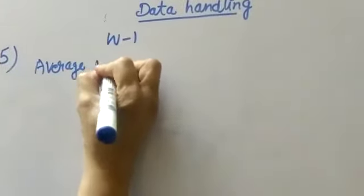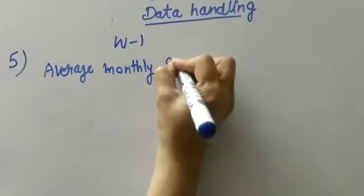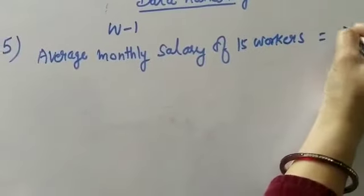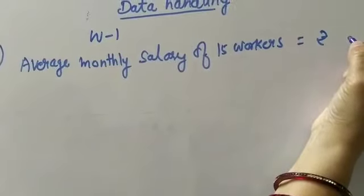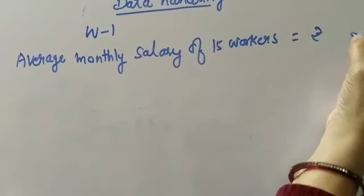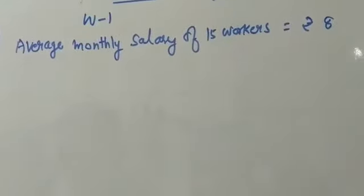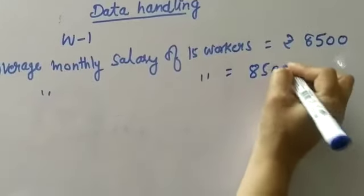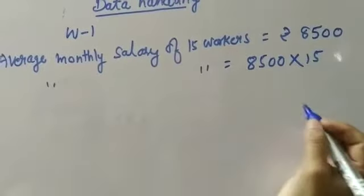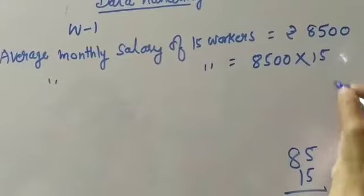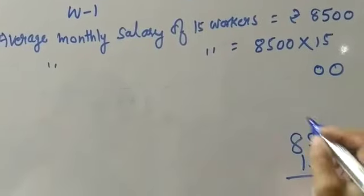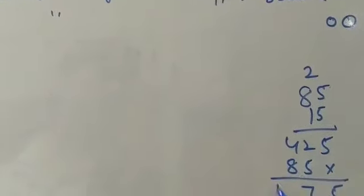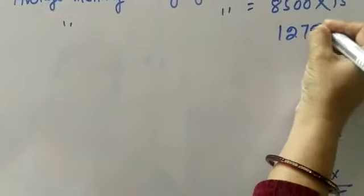Average monthly salary of 15 workers is rupees 8500. So for 15 workers, multiply 8500 into 15. If you multiply 85 by 15, you get 1275. Adding the zeros, that's 127,500 rupees. This is the salary of 15 workers.